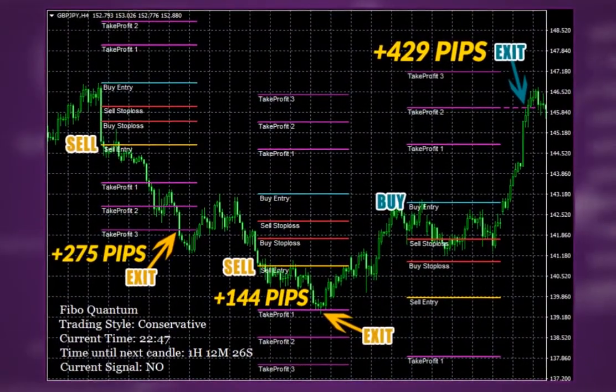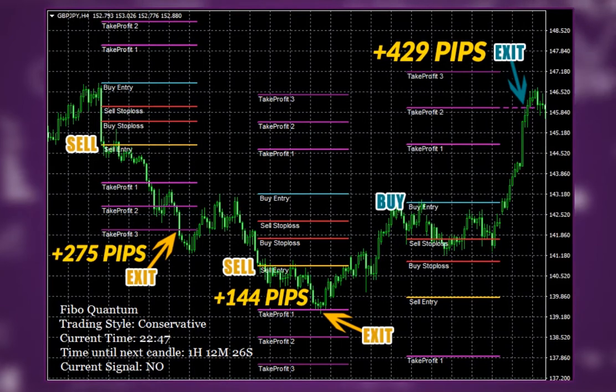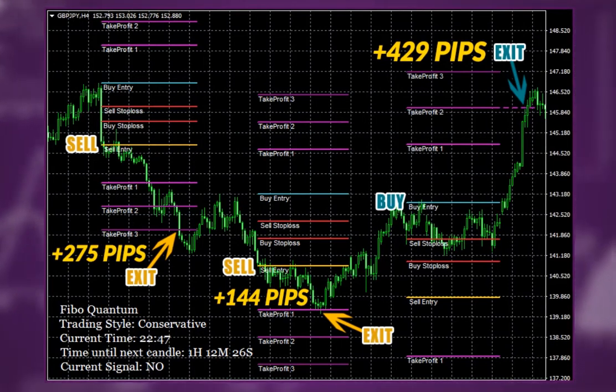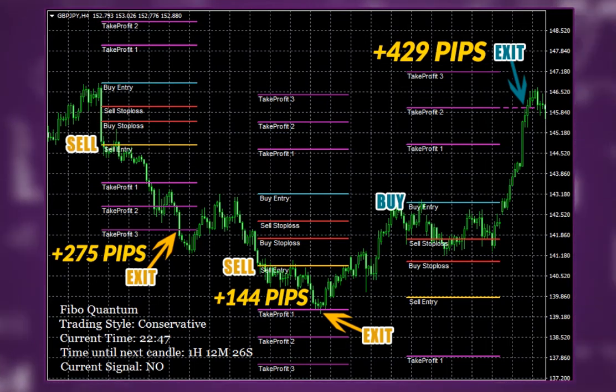And here are some more big trades with much more profit. I like to call them monster trades. British Pound, Japanese Yen, 275, 144 and 429 pips. Wow. I am always getting super excited when showing FiboQuantum to my friends or fellow traders.